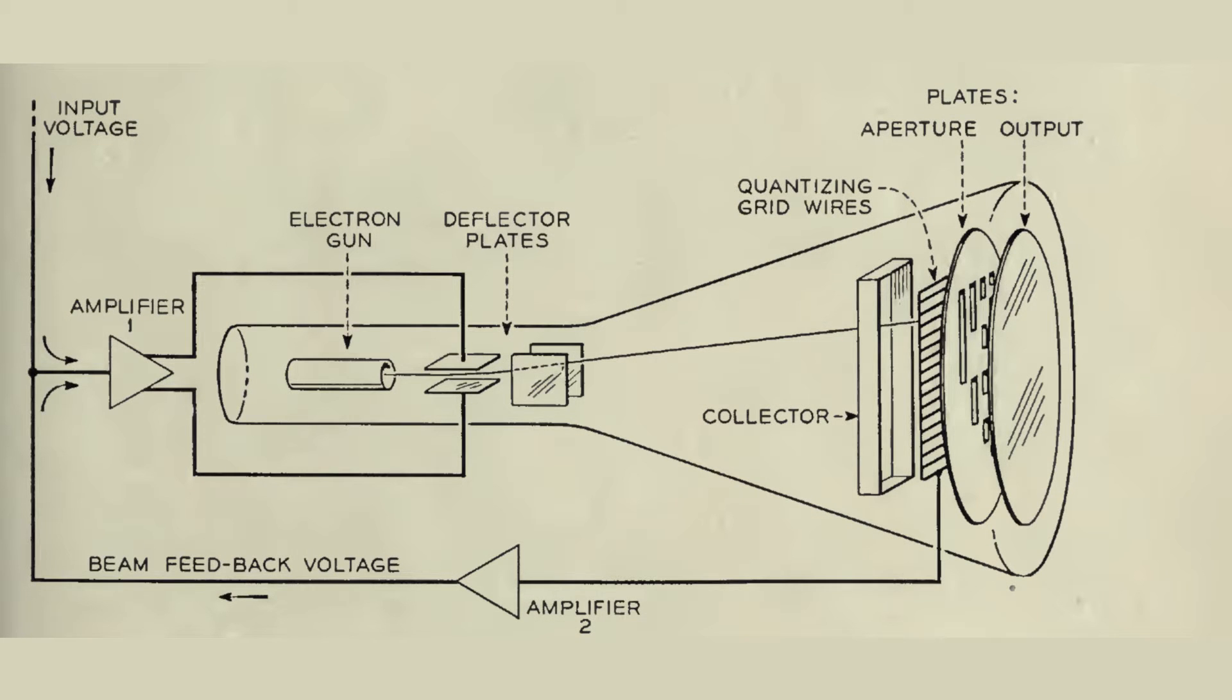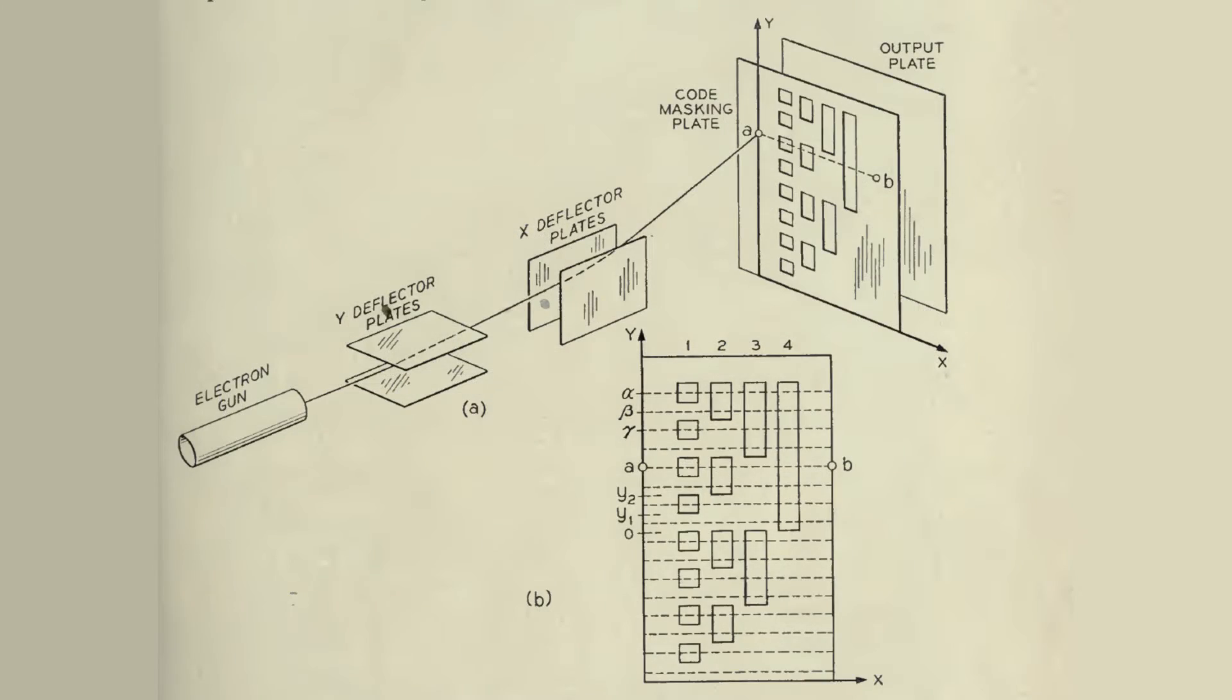The design of this 1947 PCM coding tube was similar to a conventional cathode ray tube, but in place of a phosphor screen, there was a code plate that was punched with a 7-bit binary code. This binary code was organized bitwise in the x-axis and wordwise in the y-axis. A single output electrode behind the code plate collected the electrons that passed through the apertures in the code plate.